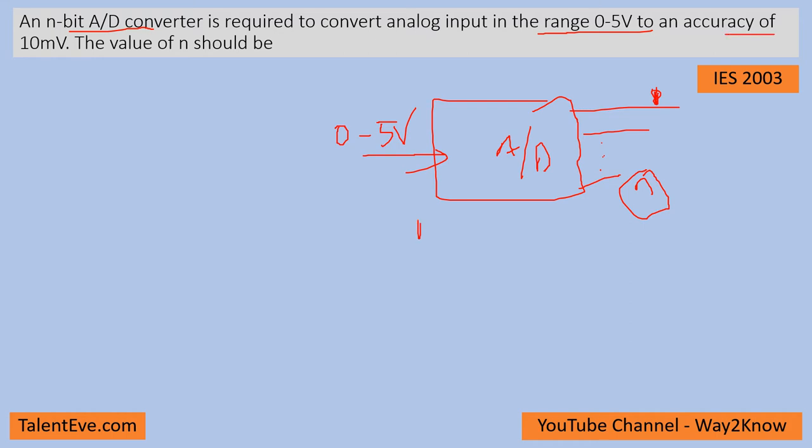For calculating the resolution, we need to know the maximum value by 2 power n minus 1. So we know resolution is 10 millivolts, n is nothing but 5 volts, 5 minus 0 by 2 power n minus 1. That means 2 power n minus 1 is equal to 0.5 divided by 0.01.